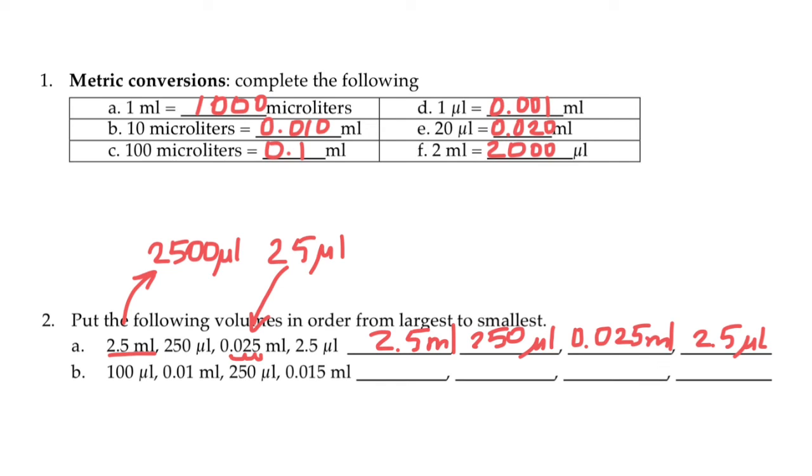Now let's convert in variant B all numbers in milliliters. For example, 100 microliters is going to be 0.1 milliliter. And 250 microliters is going to be 0.250 milliliters.